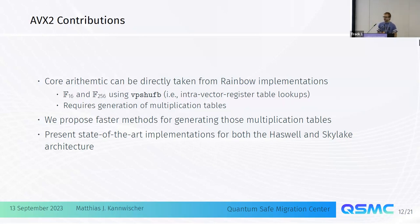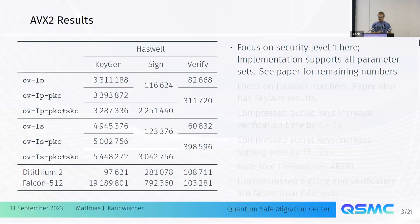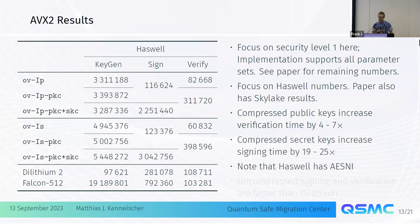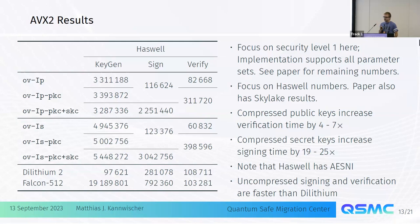Using compressed public keys gives slower verification by a factor of 4 to 7. Keep this number in mind, because here we have AES instructions so sampling is relatively fast. On other platforms, the performance penalty for compression is much higher. The uncompressed variants are actually faster than Dilithium — the performance for signing and verification is very, very fast.